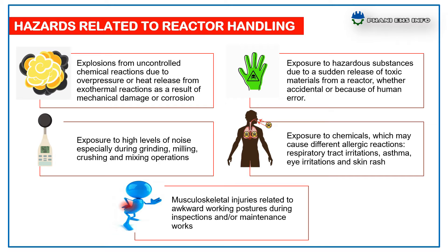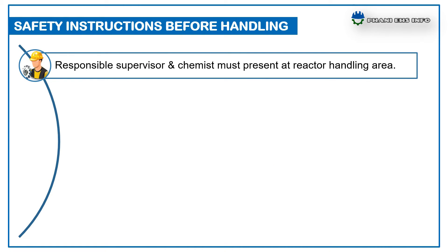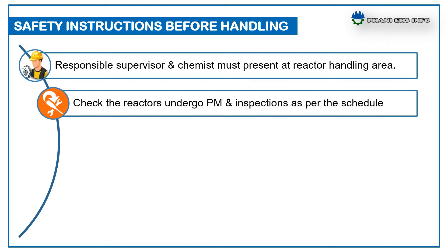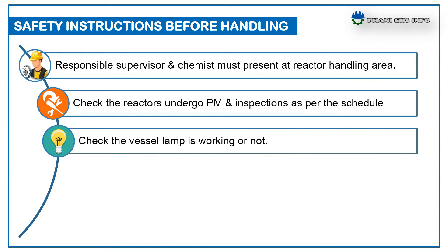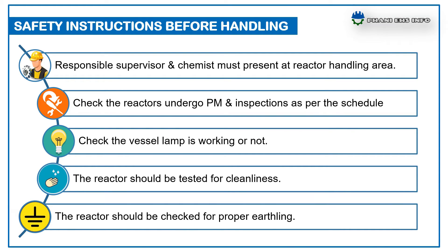For safety controls before handling a reactor, follow these instructions: responsible supervision — a chemist must be present at the reactor handling area. Check that reactors undergo preventive maintenance and inspections as per schedule. Check that the vessel lamp is working. The reactor should be checked for cleanliness and for proper earthing.